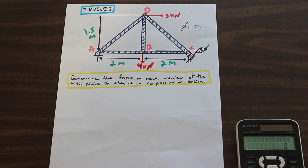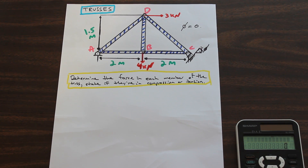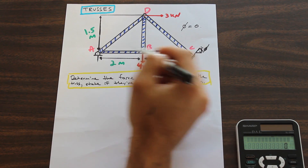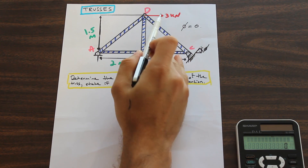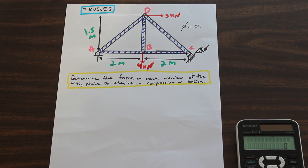We'll solve it first with no angle so you can get an idea of how solving for trusses works. This is also an introduction to internal forces. The internal force within each member of the truss is what we're going to be solving for. The question asks us to determine the force in each member — the internal force — and state if the member is in compression or tension. We have a truss ABCD, two supports, and an external force in red.